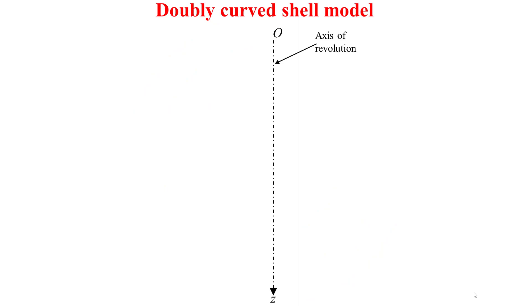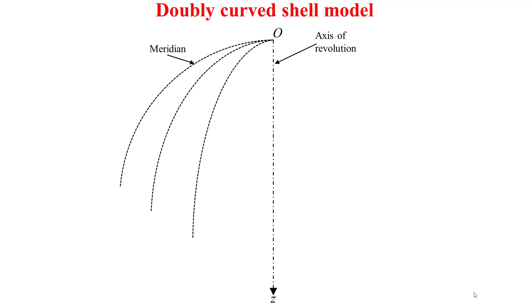Now I'll talk about the doubly curved shell model. Let's consider an axis of revolution denoted here by Z, with origin denoted by O. Let's consider a meridian — a meridian can be simply seen as a curve that, when revolved around the axis of revolution Z, will induce the doubly curved shell.